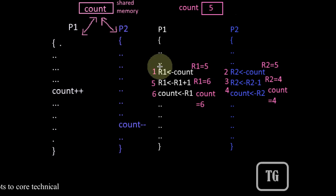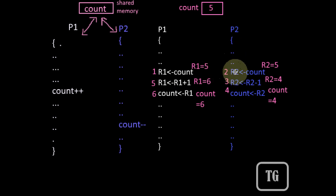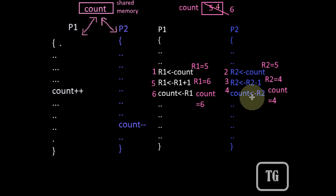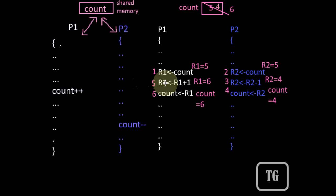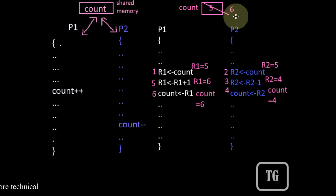Consider one more order. P1 gets the processor first, R1 is loaded with count = 5, and preemption occurs. P2 then executes all instructions: R2 is loaded with count = 5, R2 is decremented to 4, and count is updated to 4. P2 completes execution. P1 then resumes: R1 is incremented from 5 to 6, and count is updated with R1 = 6. When P1 and P2 are executed parallelly and the order of execution changes, the value of count changes.